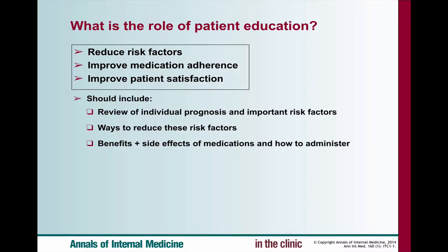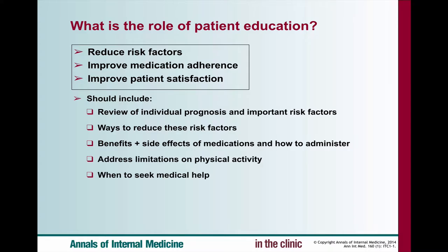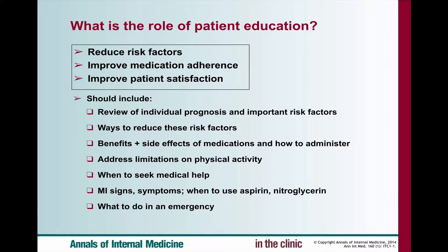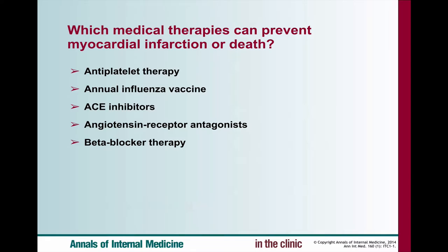The goals of treatment are to minimize likelihood of death and maximize health and function. Strategies include patient education, lifestyle modifications, medical therapy, sometimes revascularization and surgical therapy. What can we do as pharmacists? We can help identify patients who have these risk factors, educate about modifiable risk factors, improve medication adherence, and help improve patient satisfaction.